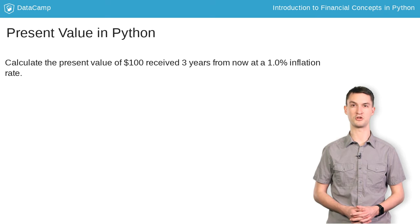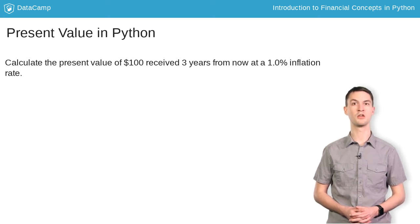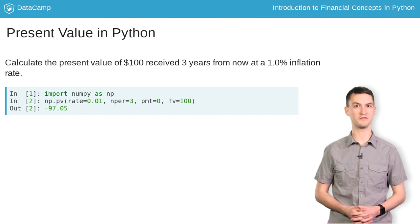To compute the present value of $100 received 3 years from now at a 1% inflation rate, we can call NumPy's .pv function, passing in the discount rate, the number of periods, and the future value.